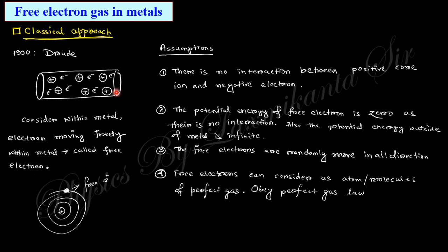The free electrons can be treated as an ideal gas. You know in the kinetic theory of gas, ideal gas particles have no interaction — that is why there is no potential energy among ideal gas particles. Similarly here, the free electrons have no potential energy, only kinetic energy is present. Although there is actually some Coulomb interaction, the assumption in Drude theory is that there is no interaction between ions and free electrons; potential energy is zero, and free electrons move randomly in all directions, obeying the perfect gas law.